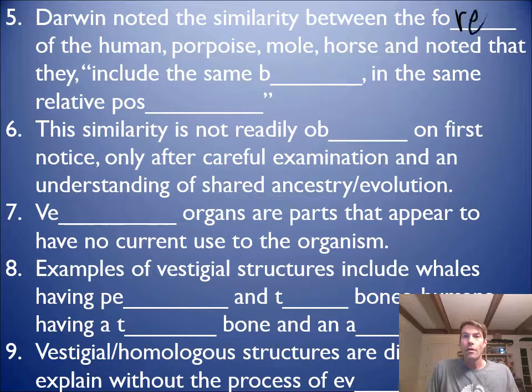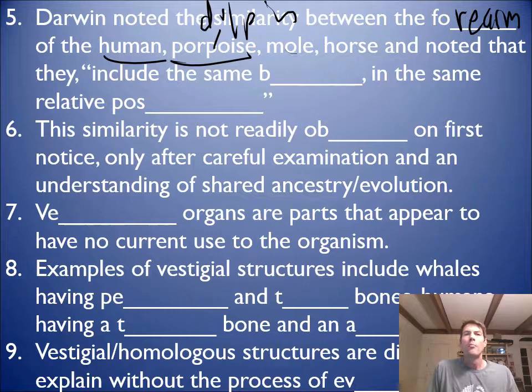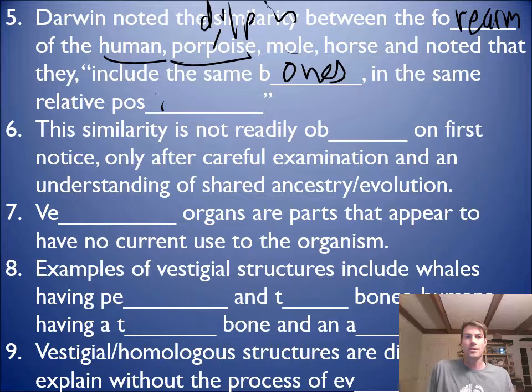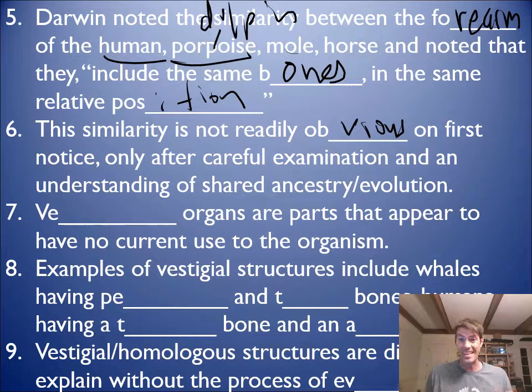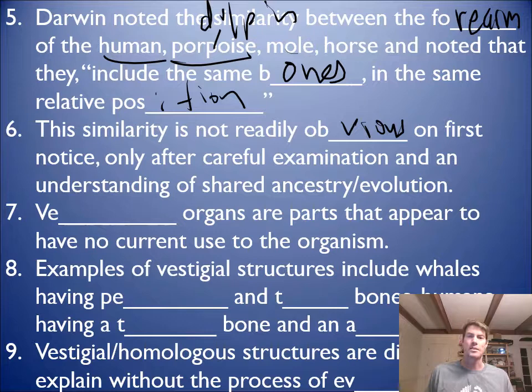The forearm of the human and the porpoise — which is kind of like a dolphin — and a mole, which is like a little gopher, and a horse. Notice they have the same bones in the same relative position. It's not really obvious at first until you really look at all the bones. Even if you eat chicken, in a chicken wing you can see a lot of similar bones and the way they come together — though not exactly similar, since chickens evolved differently from mammals.